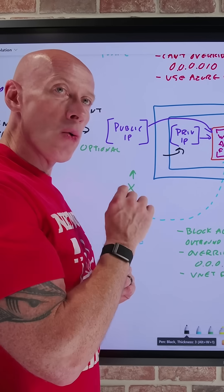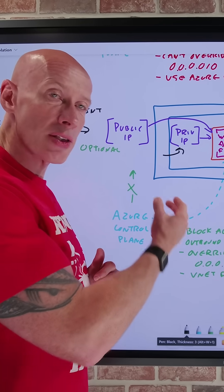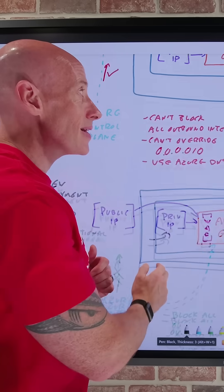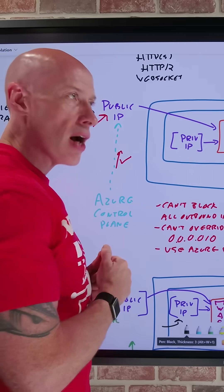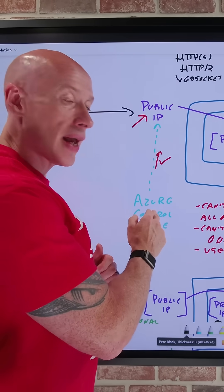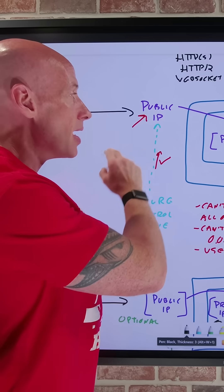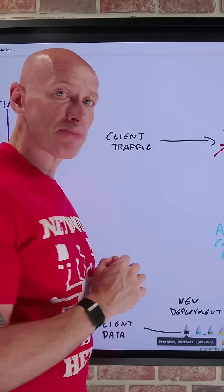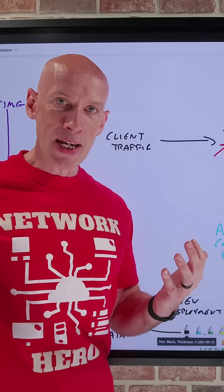Again, this only affects new deployments after creating the switch. For any existing deployments you have, they will carry on using the architecture where the control plane traffic used the same endpoint as the client traffic. Hope this is useful. Till next video, take care.